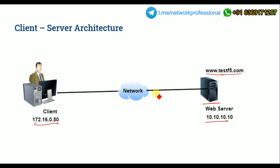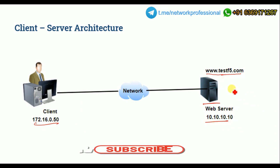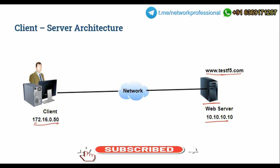If the client with IP address 172.16.0.50 wants to access testfi.com through the network, it can access the server and the application running within it. Here we're using private IP segments, treating it as an intranet. In an internet scenario, the client and server would each have public IP addresses.